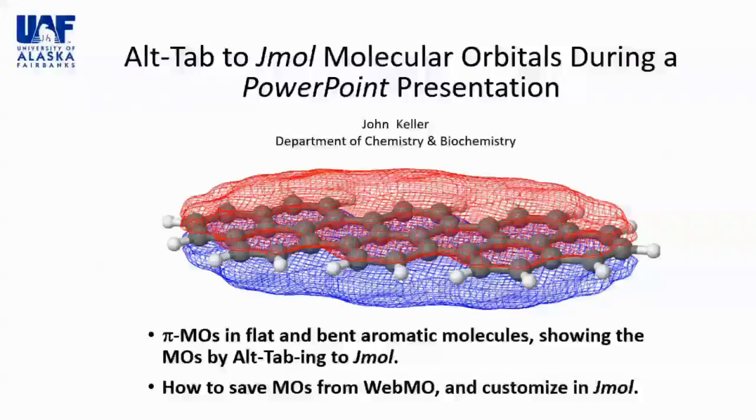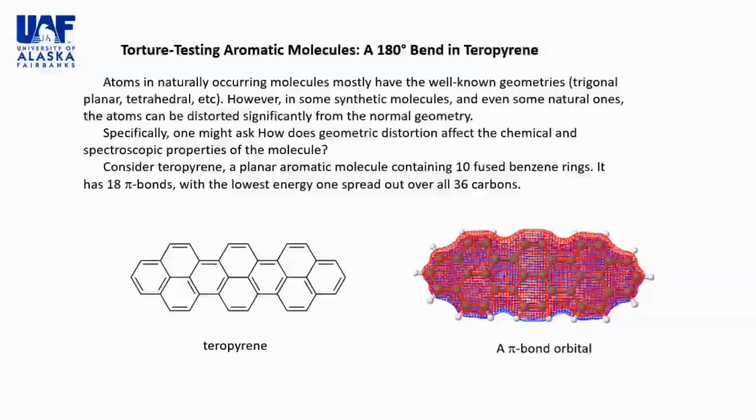second, how to calculate and save a molecular orbital in WebMO, then display and customize it using Jmol. TORTURE TESTING AROMATIC MOLECULES: A 180-DEGREE BEND IN TEROPYRENE. Atoms in naturally occurring molecules mostly have the well-known geometries—trigonal planar, etc.